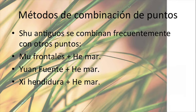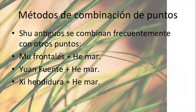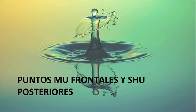En la doceava parte quiero que ya tengamos esto muy claro. La idea es reforzar ese conocimiento que tenemos. Los puntos Shu antiguos se combinan principalmente con su punto Gemar, con mu, con yu, o con chi. Vamos a ver otros métodos de combinación. Hoy quiero ampliar un poco lo que hemos visto: los puntos mu frontales y los puntos Shu posteriores. Los mu frontales también se denominan puntos mu anteriores o puntos mu ventrales. Los puntos Shu posteriores se denominan Shu dorsales o Shu posteriores.